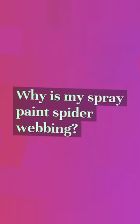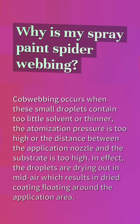Why is my spray paint spider webbing? Cobwebbing occurs when these small droplets contain too little solvent or thinner, the atomization pressure is too high, or the distance between the application nozzle and the substrate is too high. In effect, the droplets are drying out in midair, which results in dried coating floating around the application area.